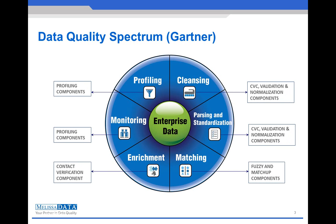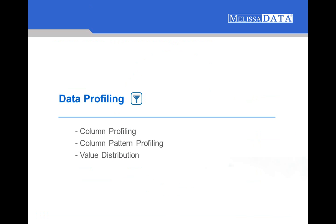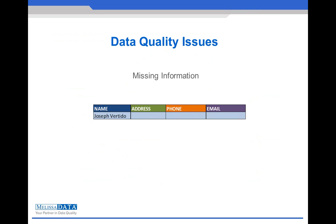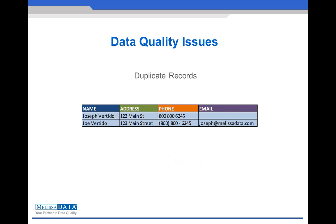Let's talk about each of these components, what problems they address, and how they help us achieve overall better data quality. First, we have our profiling components. Some of the common problems in data quality include inaccurate and inconsistent data, missing information creating gaps and holes in our data, and finally, duplicate records.